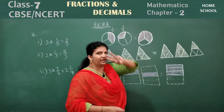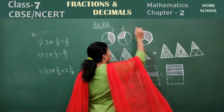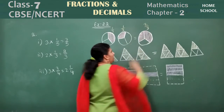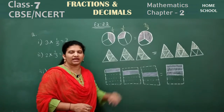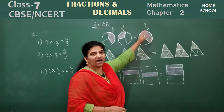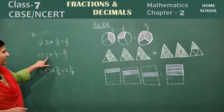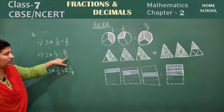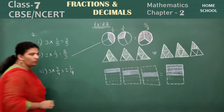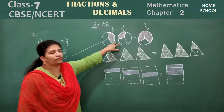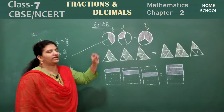Now observe this one: as a whole made into 3 parts, 2 parts are shaded — how do you write this? 2 by 3. And for the 2 figures on the left, 2 into 1 by 3 will be 2 by 3. See the RHS is also 2 by 3. So the equation is 2 into 1 by 3 equals 2 by 3. Match this picture to this equation.